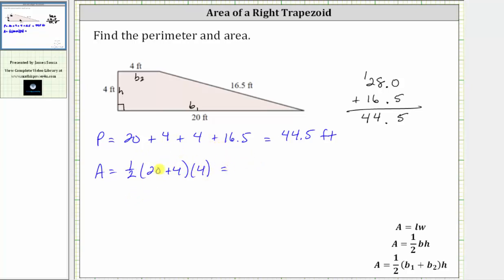Simplifying, inside the parentheses, 20 plus four is 24, giving us one half times 24 times four. Well, one half times 24 is 12. 12 times four is 48. The area is 48 square feet.